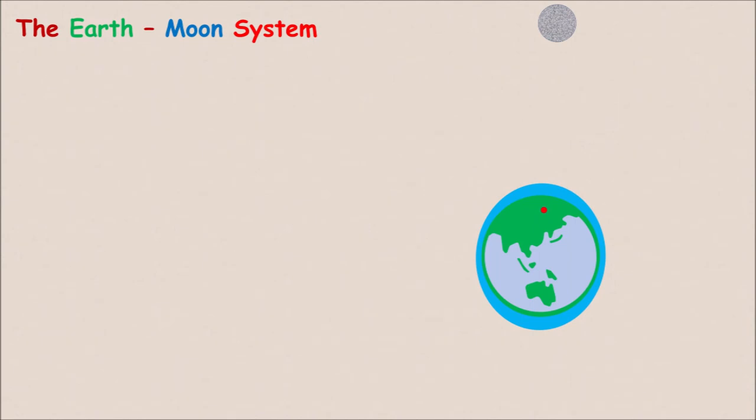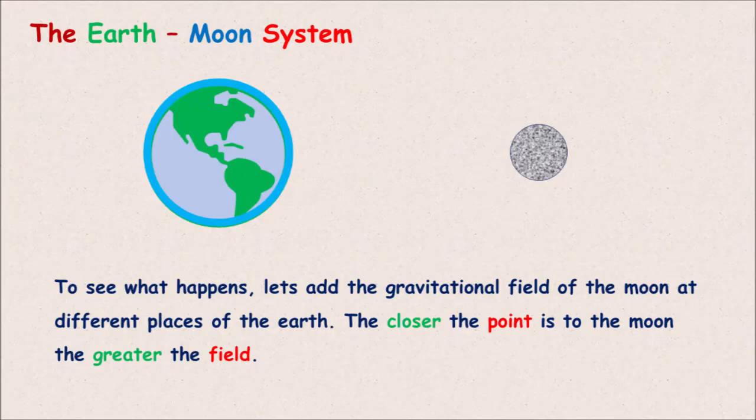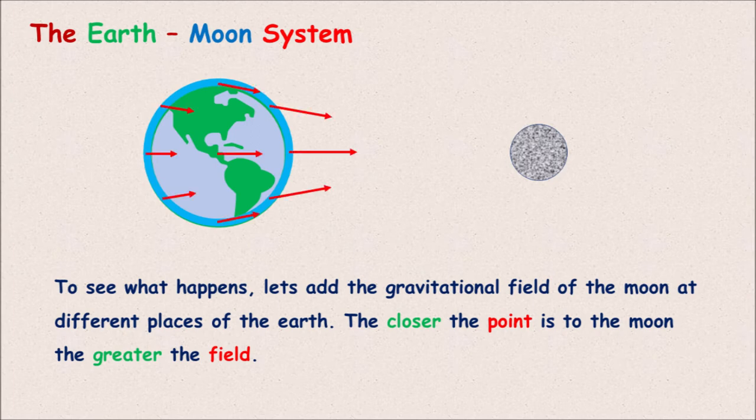Now let's see how we can get to this result mathematically. To see what happens, let's add the gravitational field of the moon at different points of the earth. The closer the point is to the moon, the greater the field.